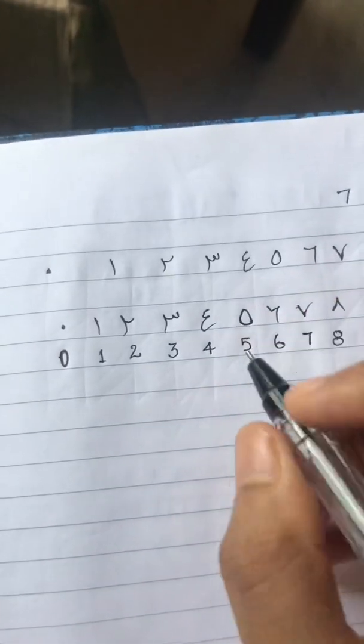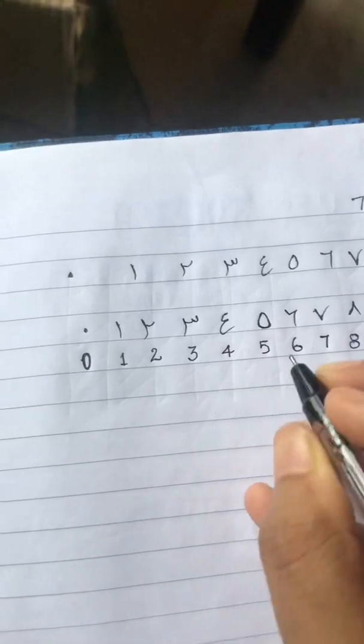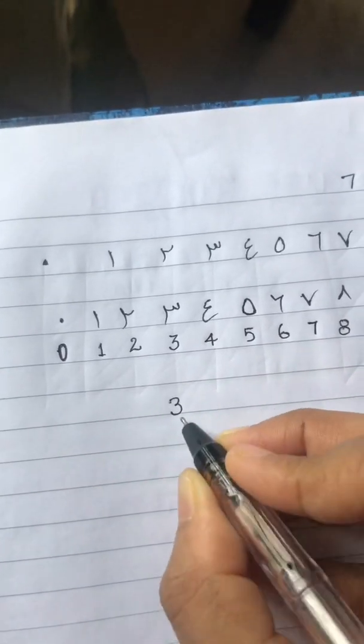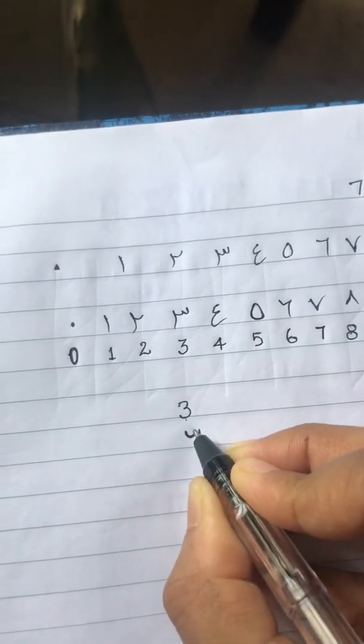Yeah, three, you know there is an easier way to write it. Remember three, you have three right? So you just have to rotate this, put it like this, three, write a three and then you put a standing line.